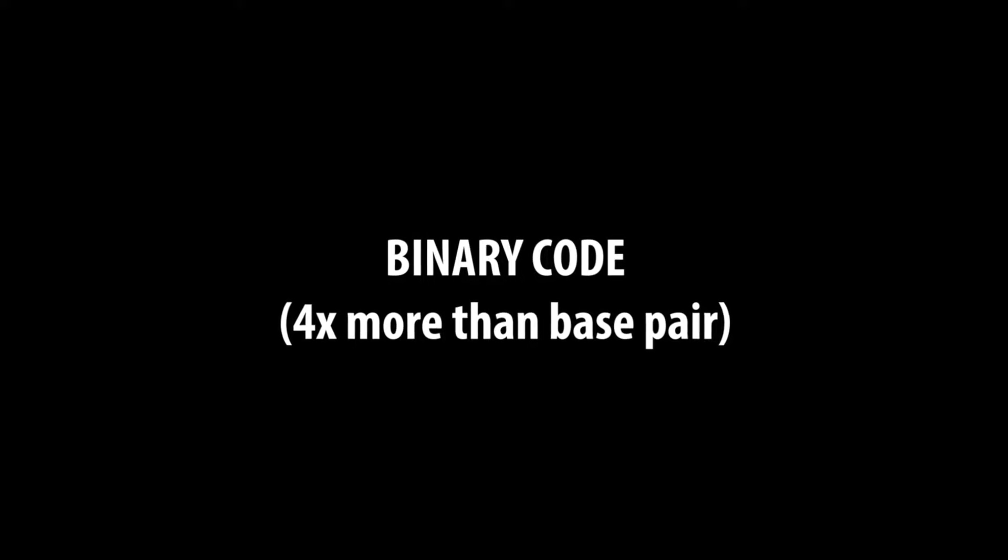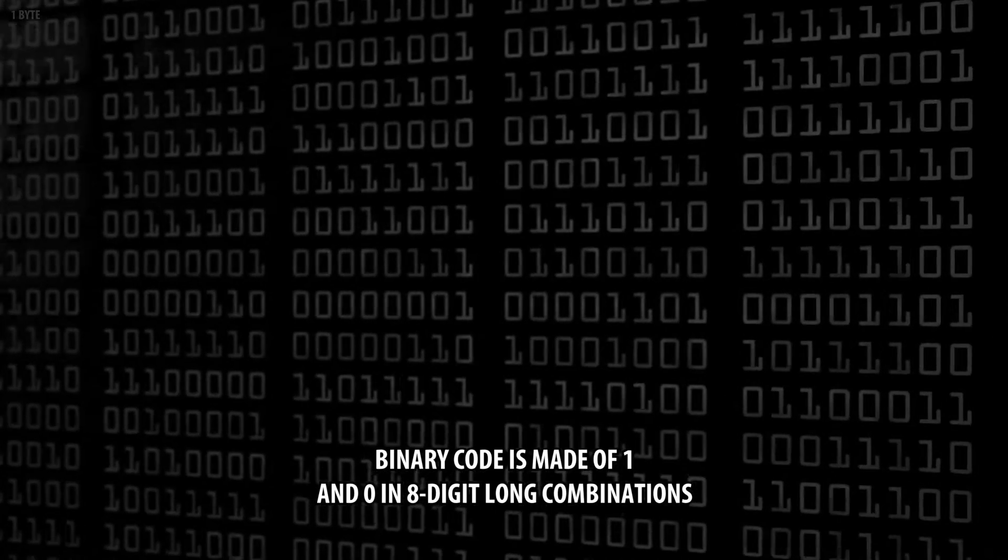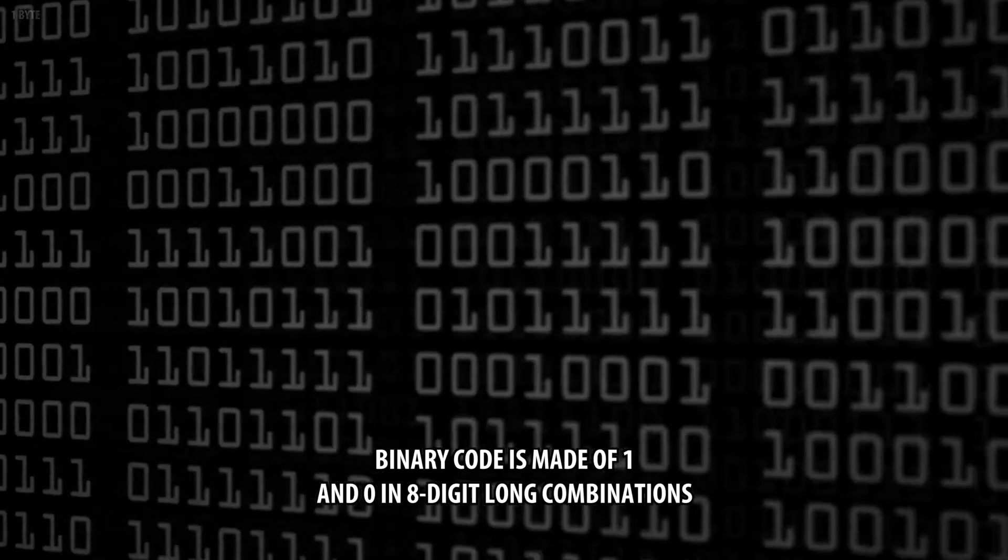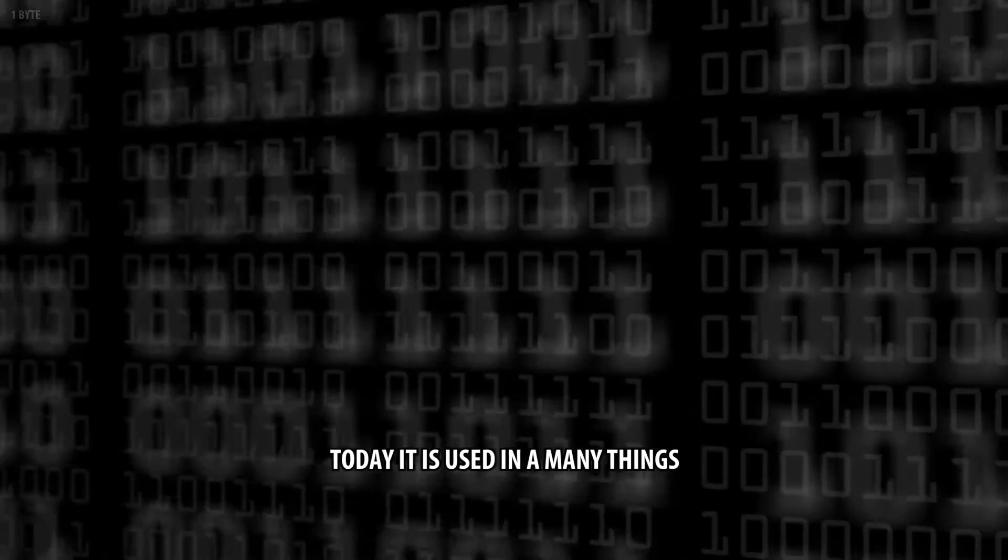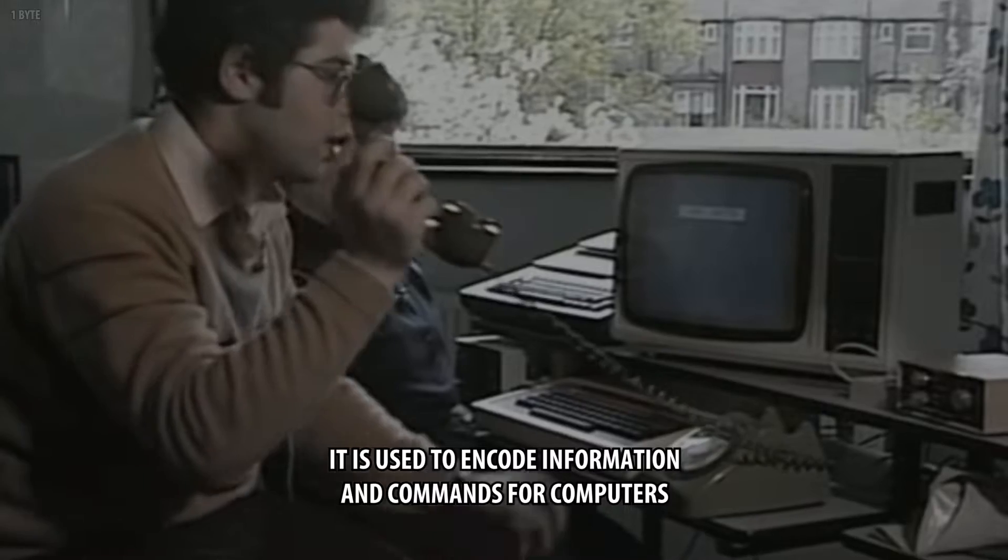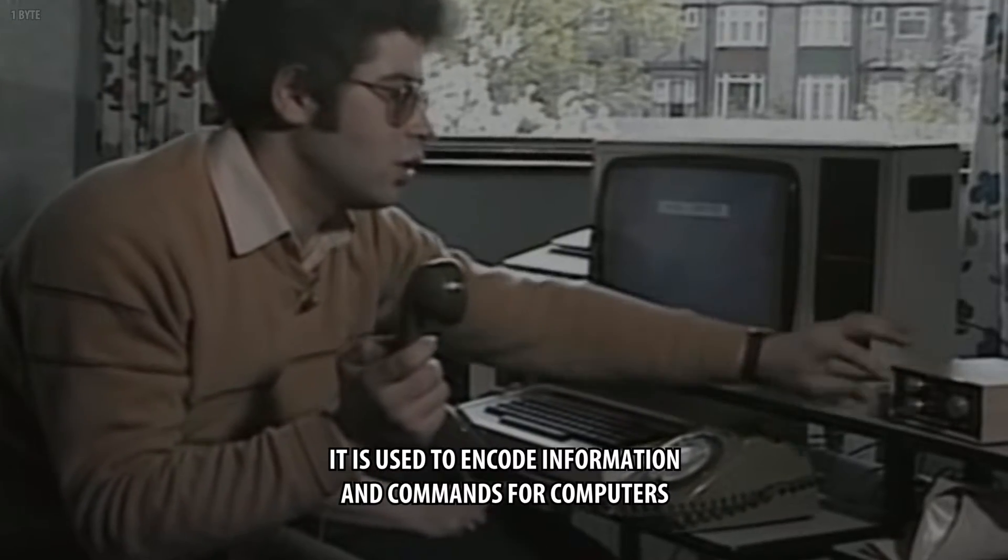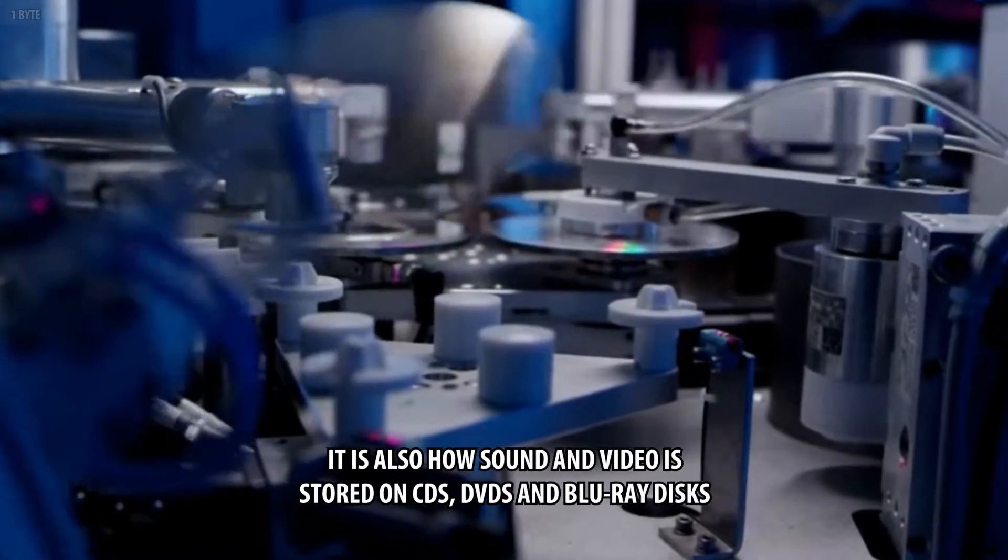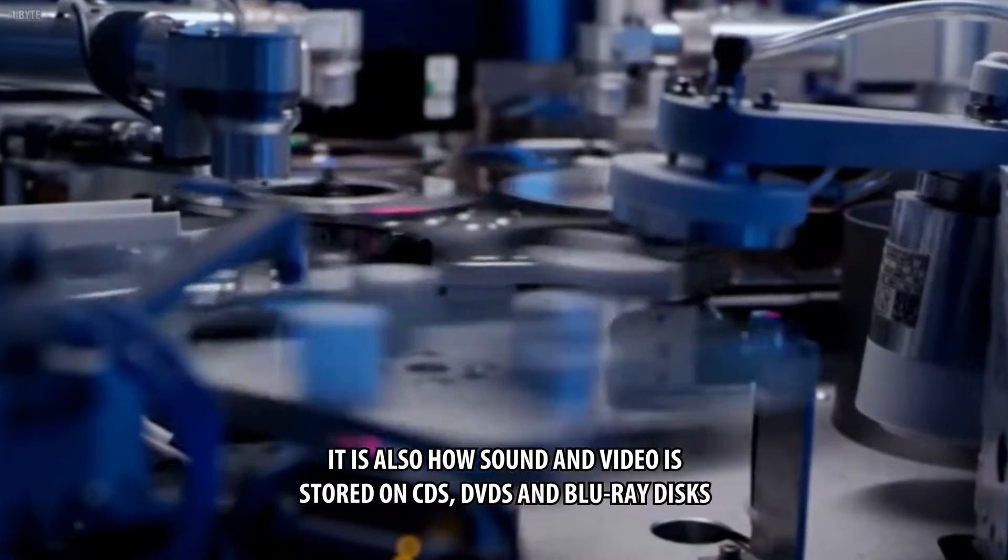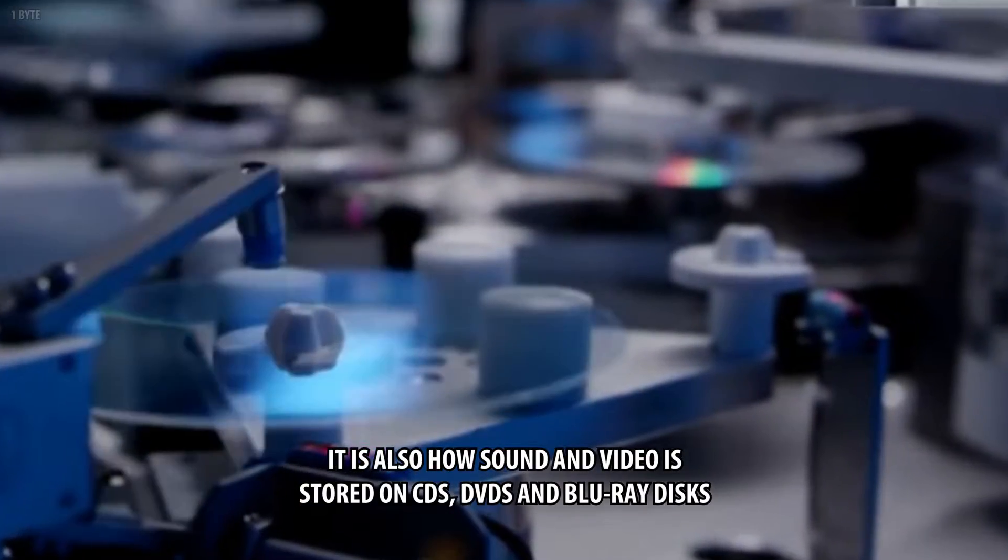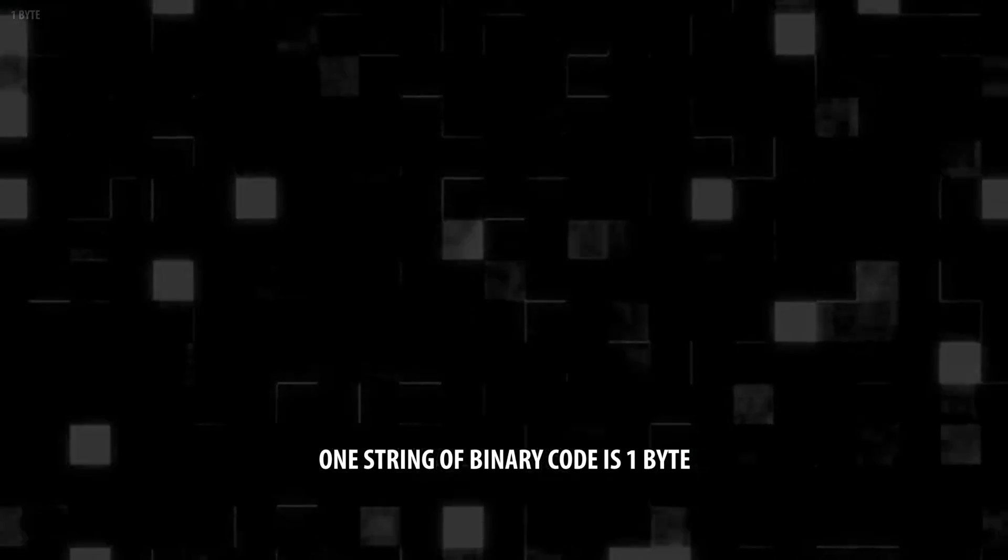Binary code, 4 times more than base pair. Binary code is made of 1 and 0 in 8-digit long combinations. Today it is used in many things. It is used to encode information and commands for computers. It is also how sounds and video are stored on CDs, DVDs, and Blu-ray discs. One string of binary code is 1 byte.